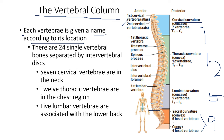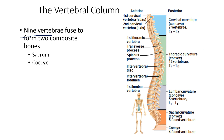It is very important to memorize this structure, especially the numbers: 7, 12, 5, then 5 sacral and 4 coccygeal. The sacral and coccyx are joined together. Nine vertebrae form two composite bones — the sacrum and coccyx.